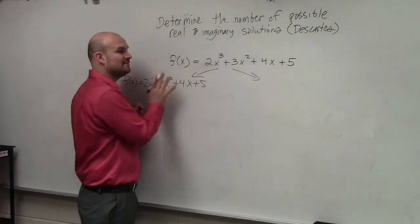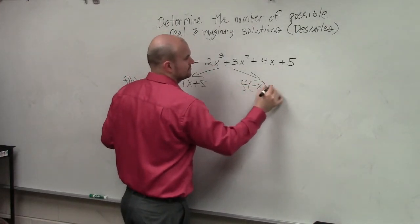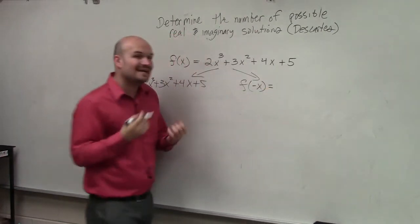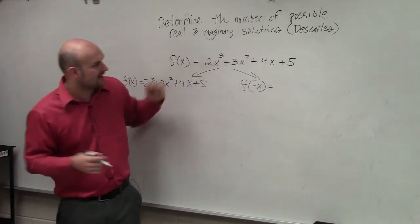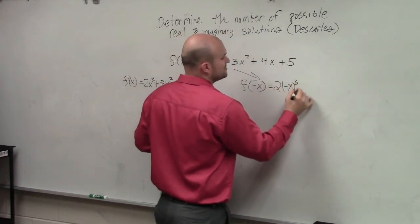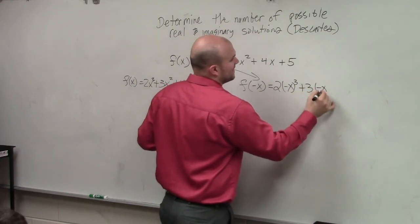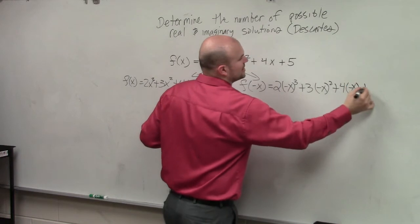Okay, so you have the positive and then you also have the negative. So what the negative is, is again, what we're doing is we're inserting in negative x. So therefore, this is going to be 2 times negative x cubed plus 3 times negative x squared plus 4 times negative x plus 5.